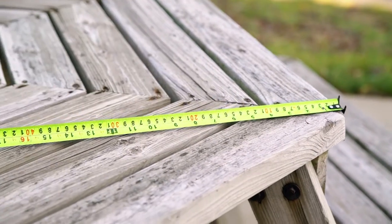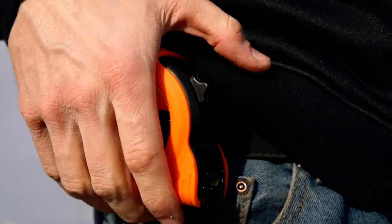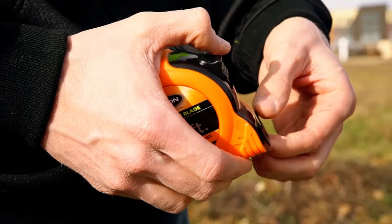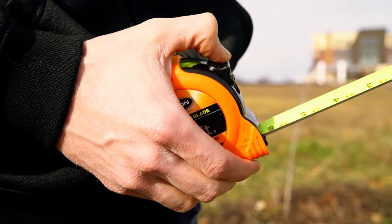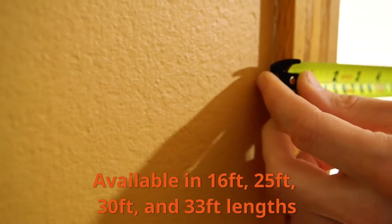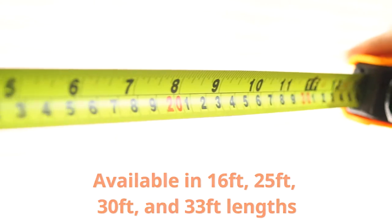The housing is a solid ABS housing that is further protected by a high visibility Kesson orange casing. We offer this tape in 16 feet, 25 feet, 30 feet and 33 feet lengths.